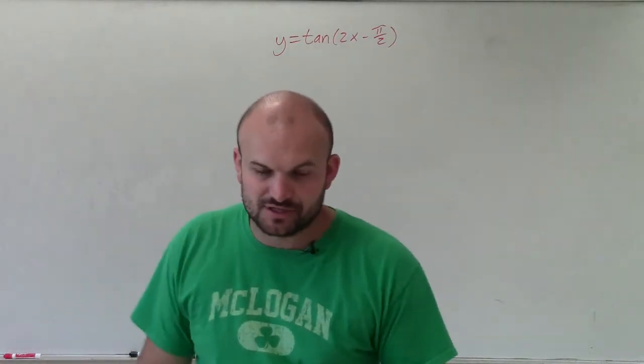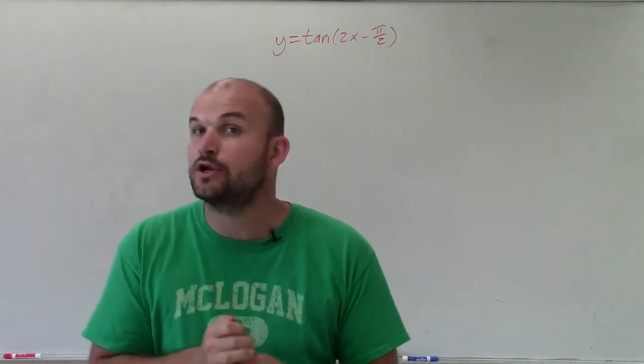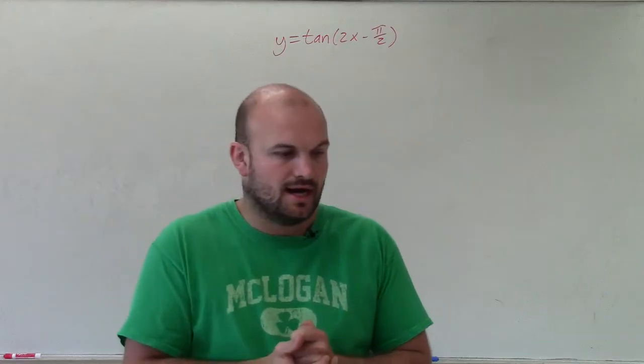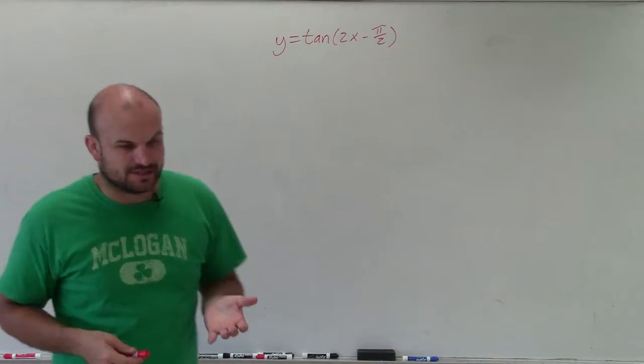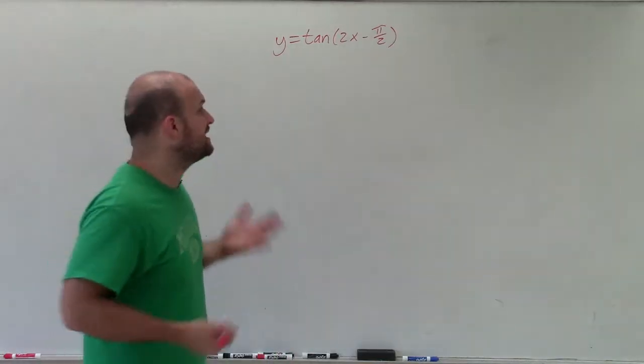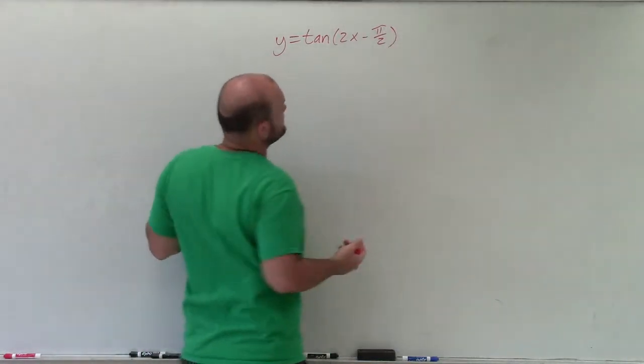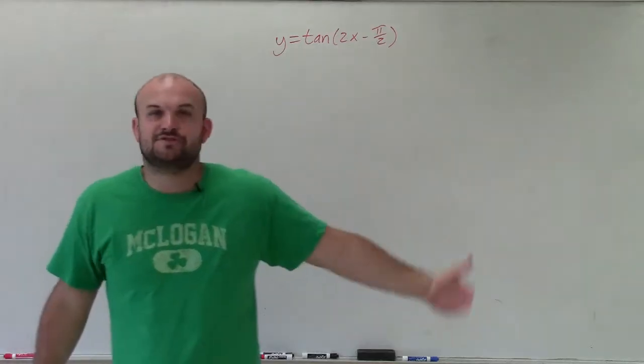When graphing the tangent function, the important thing is we want to know what the parent function looks like, or the parent graph is going to look like, and then also to identify what exactly is going to be our transformation. A lot of students will see this negative pi halves and say, oh, it's just going to be shifted pi halves to the right.